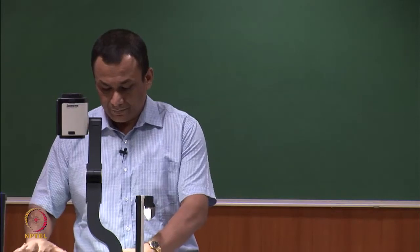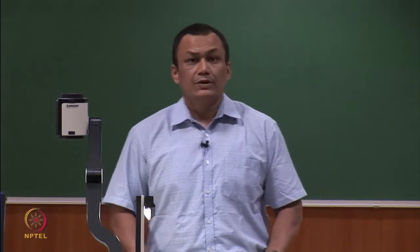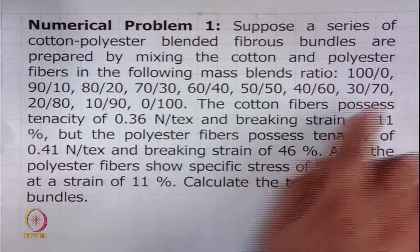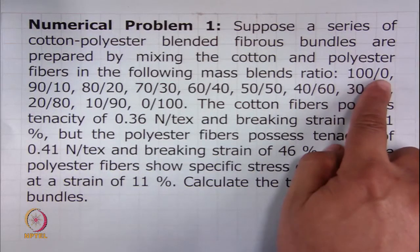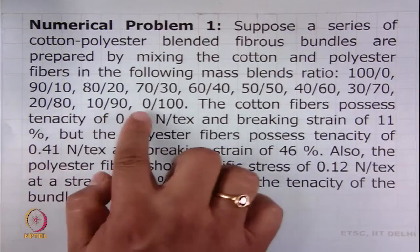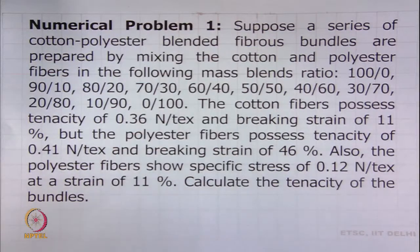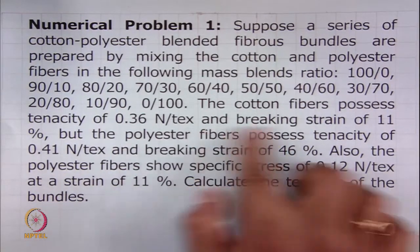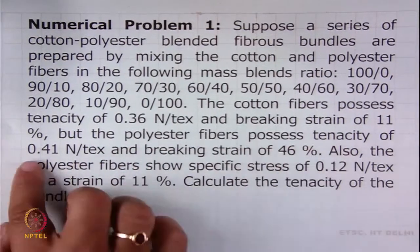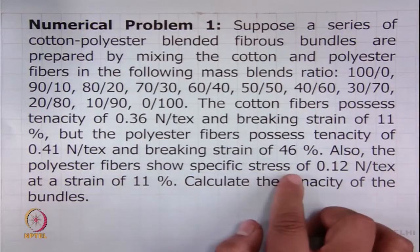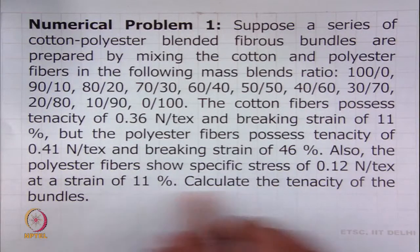The first numerical problem reads as follows. Suppose a series of cotton-polyester blended fibrous bundles are prepared by mixing cotton and polyester fibres in the following mass blend ratios: 100:0, 90:10, 80:20, 70:30, 60:40, 50:50, 40:60, 30:70, 20:80, 10:90, and 0:100 — meaning 100 percent polyester fibres. The cotton fibres possess a tenacity of 0.36 Newton per tex and breaking strain of 11 percent, while the polyester fibres possess a tenacity of 0.41 Newton per tex and breaking strain of 46 percent. The polyester fibres show a specific stress of 0.12 Newton per tex at a strain of 11 percent. Calculate the tenacity of the bundles.